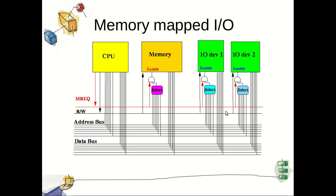This topic is related to addressing modes in IO management. There are two different addressing modes available: first one is memory mapped IO and second one is IO mapped IO. In case of memory mapped IO, the CPU, memory, and different IO devices are directly communicated with the help of different buses. With memory mapped IO, there is a single address space for memory locations and input/output devices.